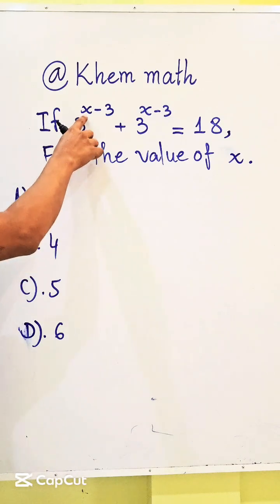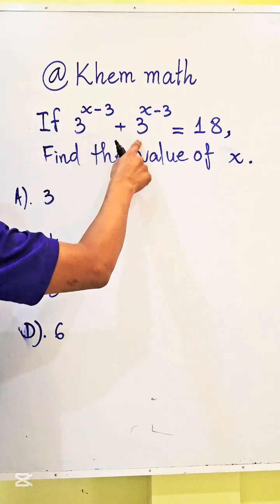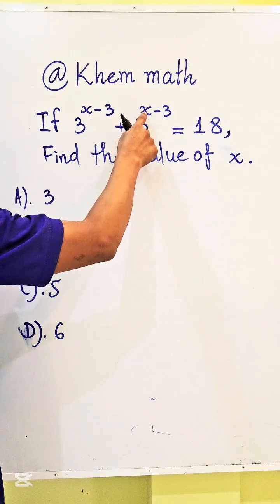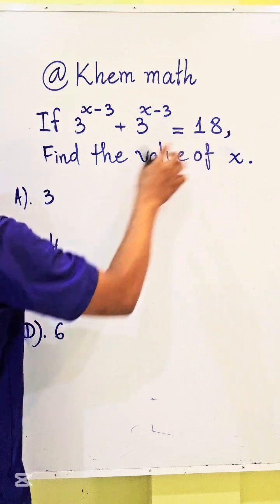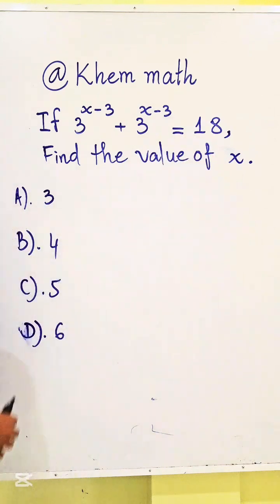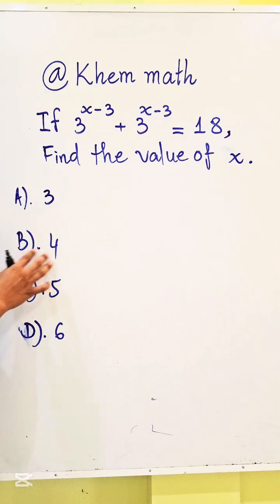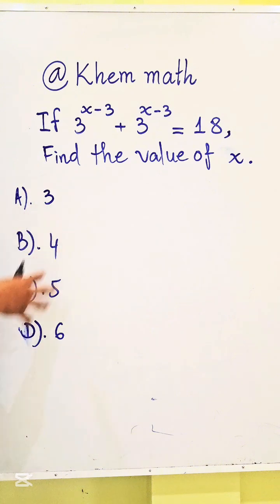If 3 power x minus 3 plus 3 power x minus 3 equals 18, find the value of x. The answer choices are: A equals 3, B equals 4, C equals 5, and D equals 6. Which one is our answer?